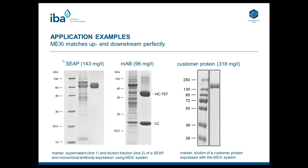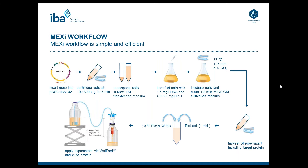We talked about problems purifying proteins from mammalian supernatants, and here we have three examples of proteins expressed in the Maxi system and purified with our Streptactin system. First, secreted alkaline phosphatase was produced at 143 mg/L with over 95% purity by bioanalysis. Second, a monoclonal antibody was produced for a customer at 100 mg/L purified protein, showing high purity of both heavy and light chains. Finally, a customer protein was expressed at over 300 mg/L in a batch process without any feeds, with 100% purity after one-step Streptactin purification.